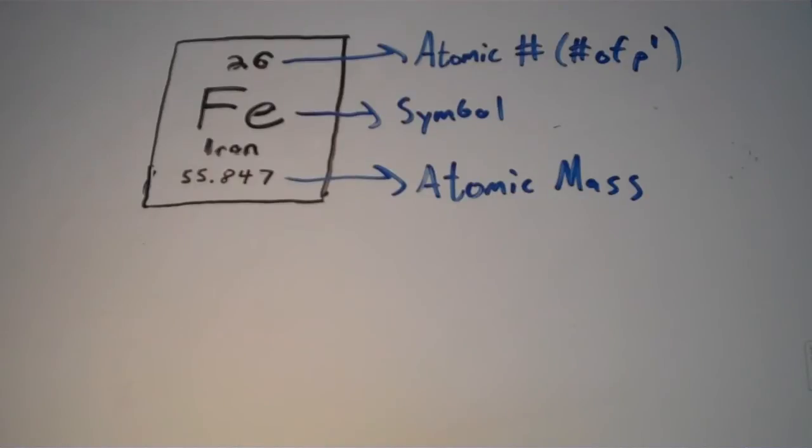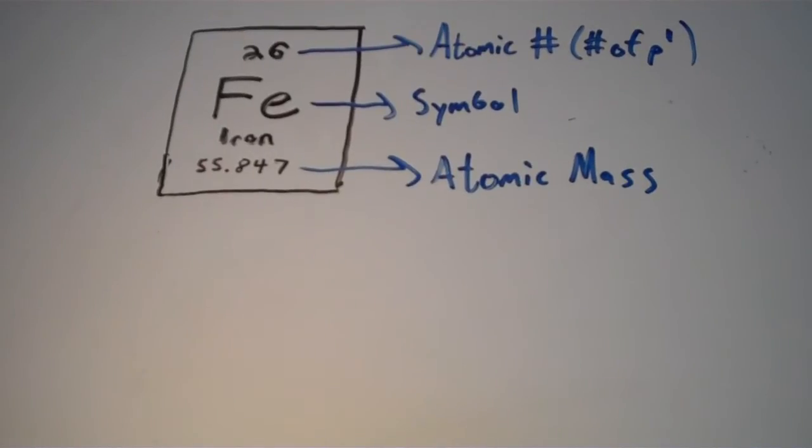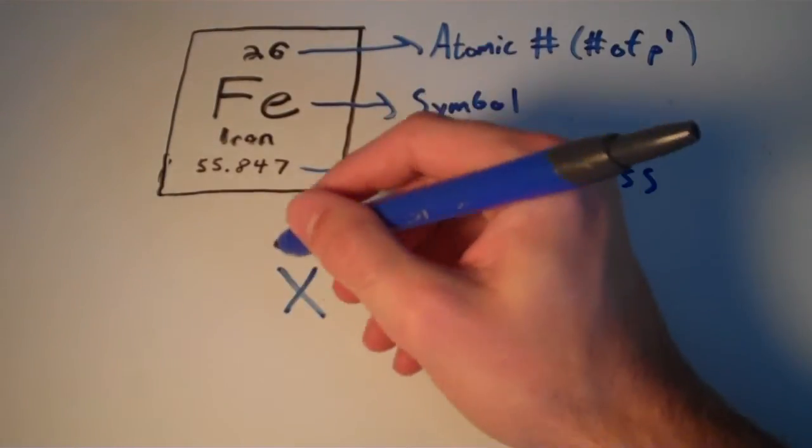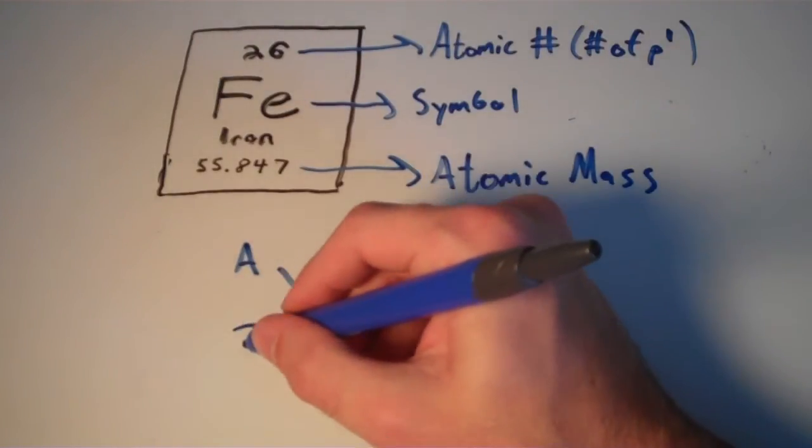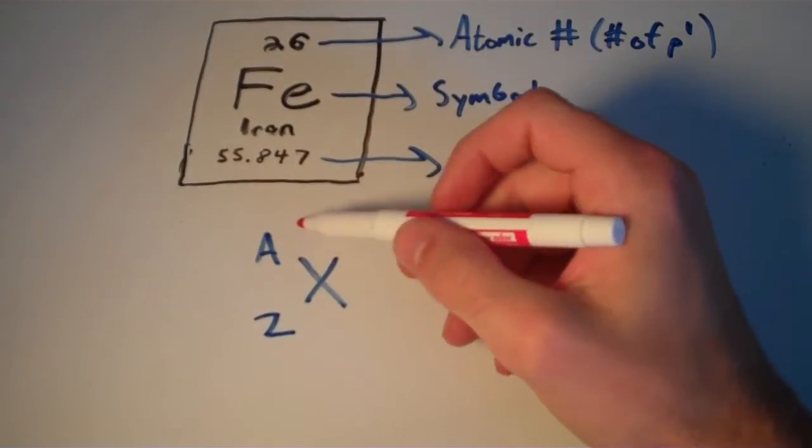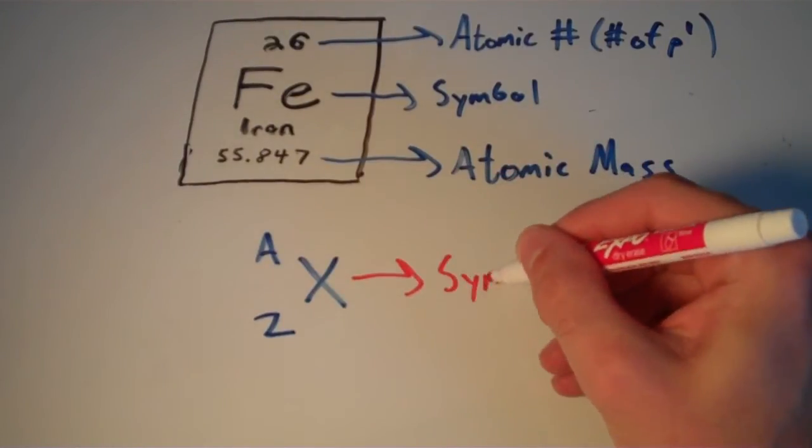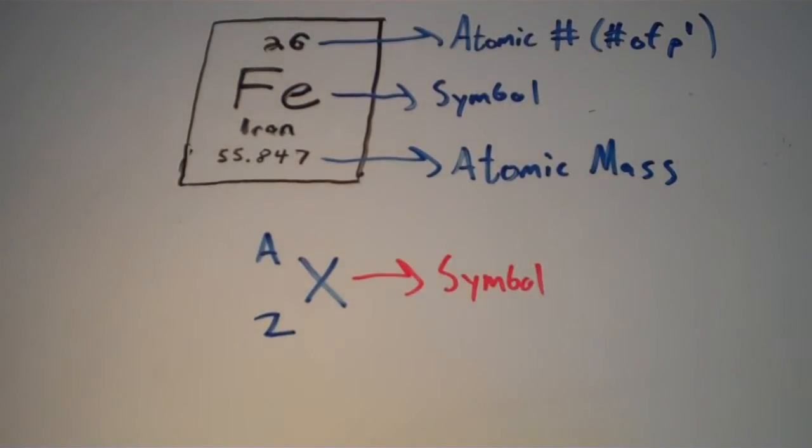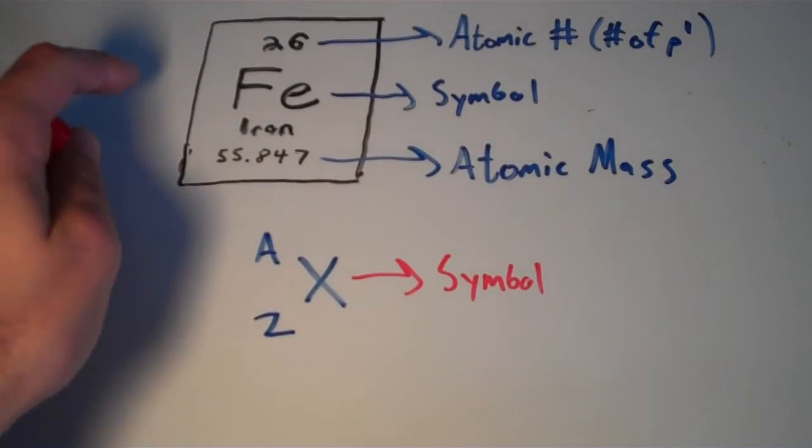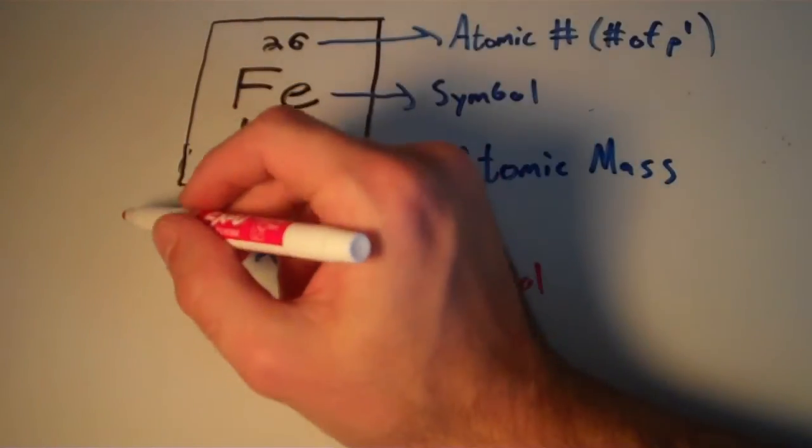So now we're going to go into the notation that we use to describe these atoms. So in general, the notation has the following form. We have a capital X, and before that we have a superscript A, and then a subscript Z. The X is just going to be the symbol. So in the case of iron, the symbol would be Fe.